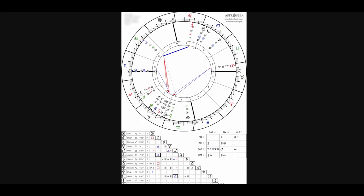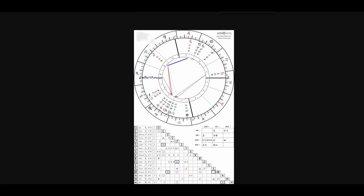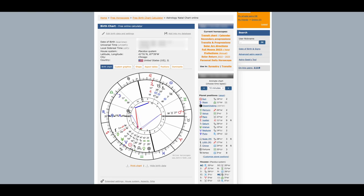From here, click the Print Chart button right below the chart and that's going to open a printable sheet. This is what you're going to print out and bring to the retreat or workshop — whatever it is that brought you to this video. That's all — thanks for watching and I'll see you later!